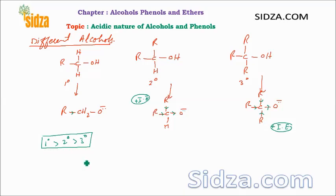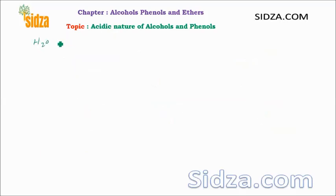So among different alcohols, phenols are more acidic than alcohols, and among the alcohols the order is: primary is more acidic than secondary, then tertiary. The logic is the same — we check the stability of the conjugate base: the primary conjugate base is more stable than secondary, which is more stable than tertiary.